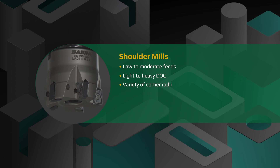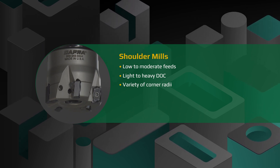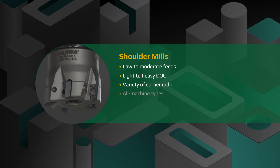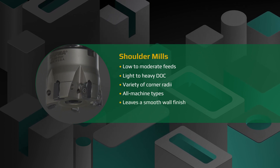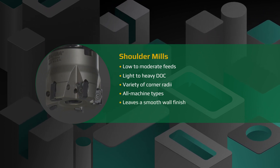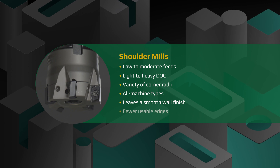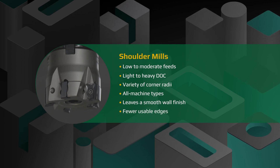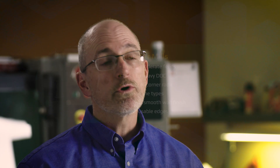Shoulder mills typically come in a variety of corner radii to fulfill most part requirements. They're suitable for all machine types and can leave a fine finish when needed. Shoulder milling inserts generally provide between two to six usable cutting edges depending on the insert design. More usable edges generally mean somewhat less versatility in use.